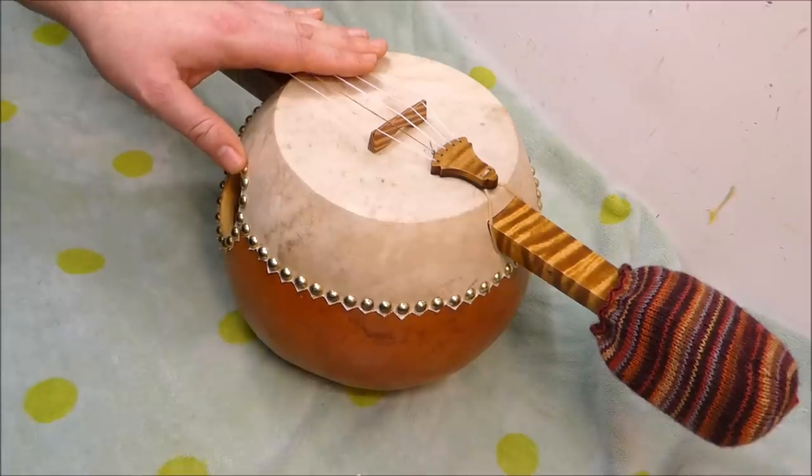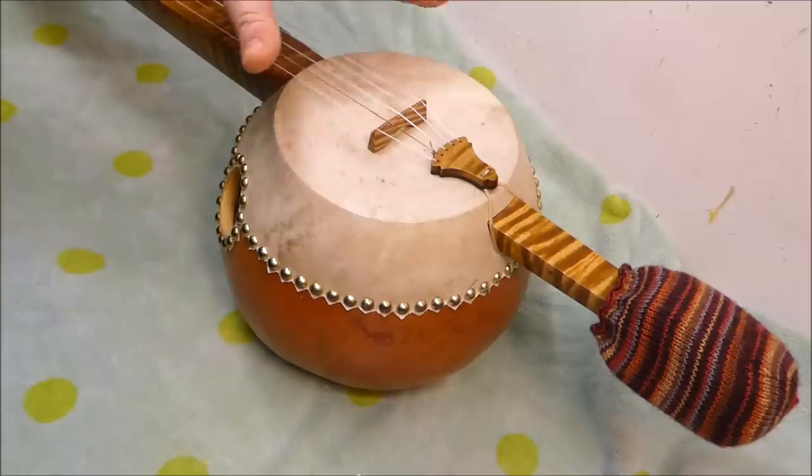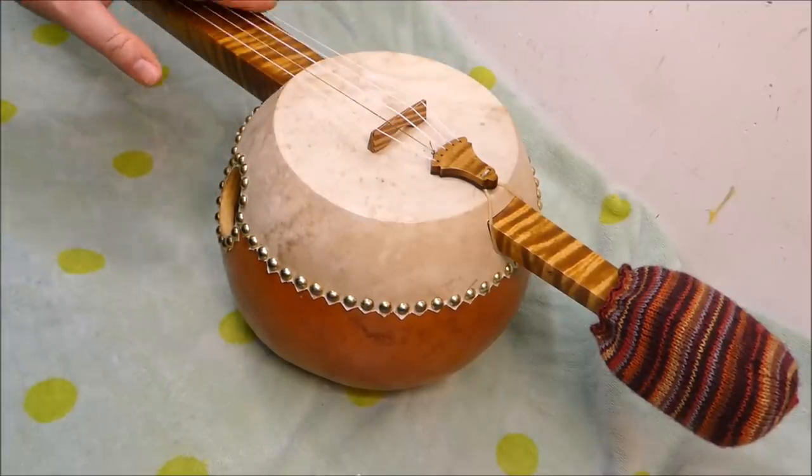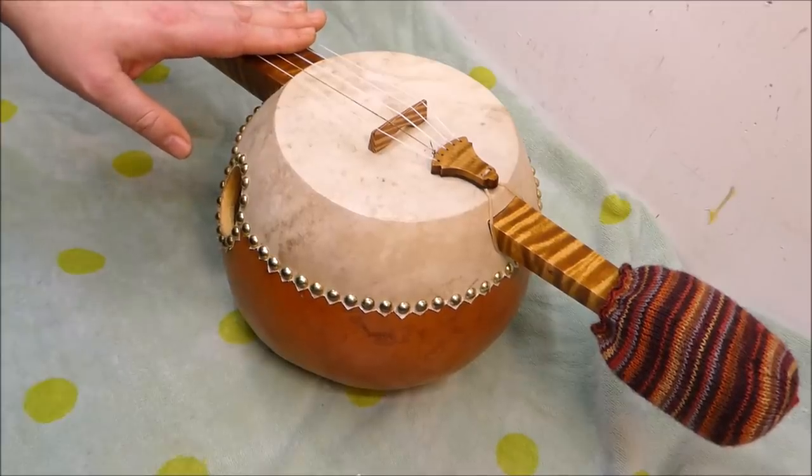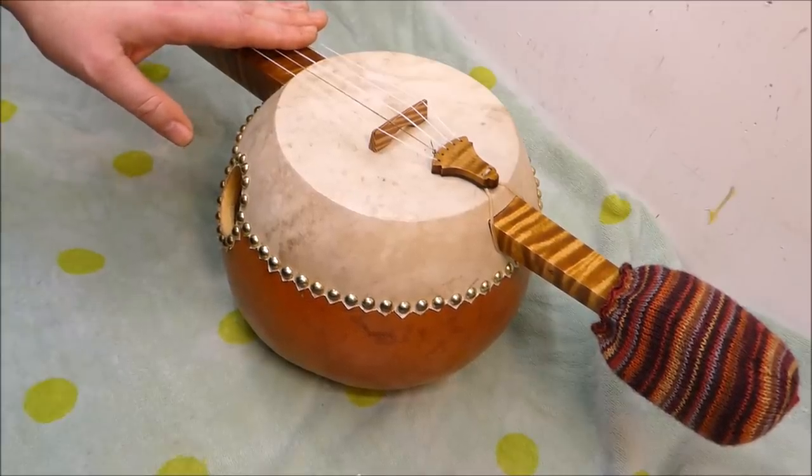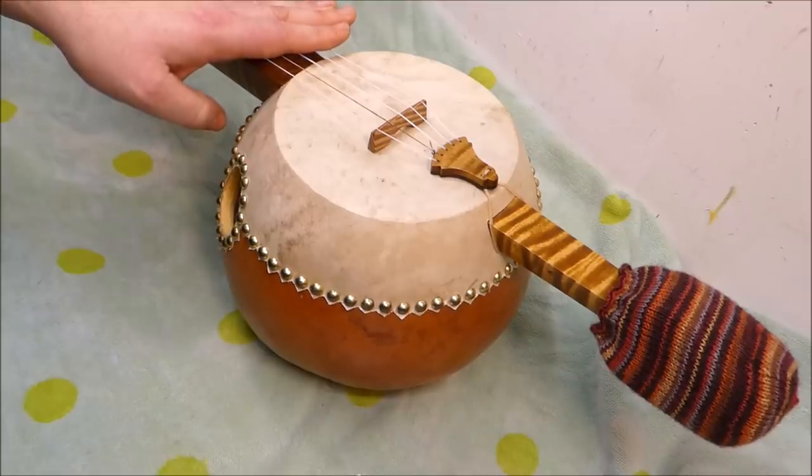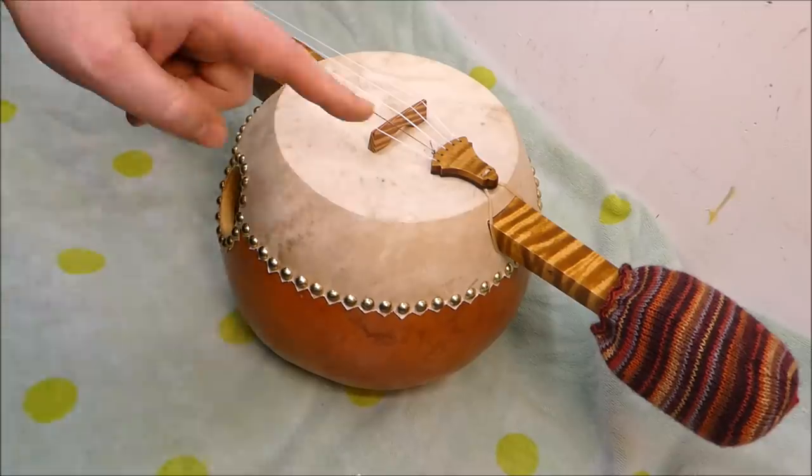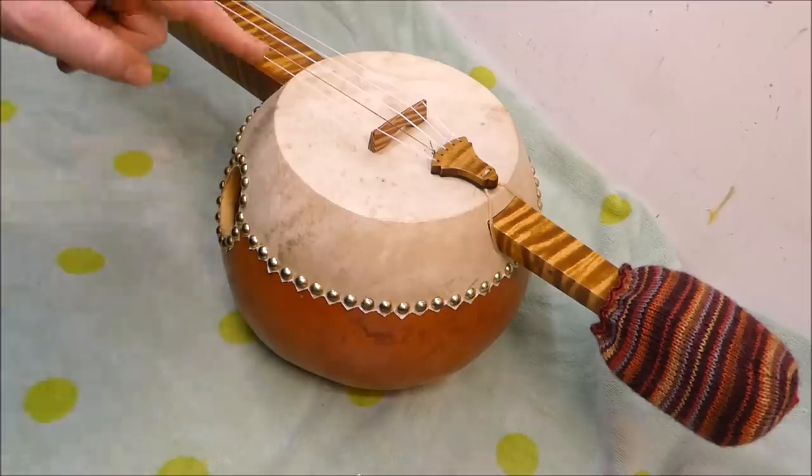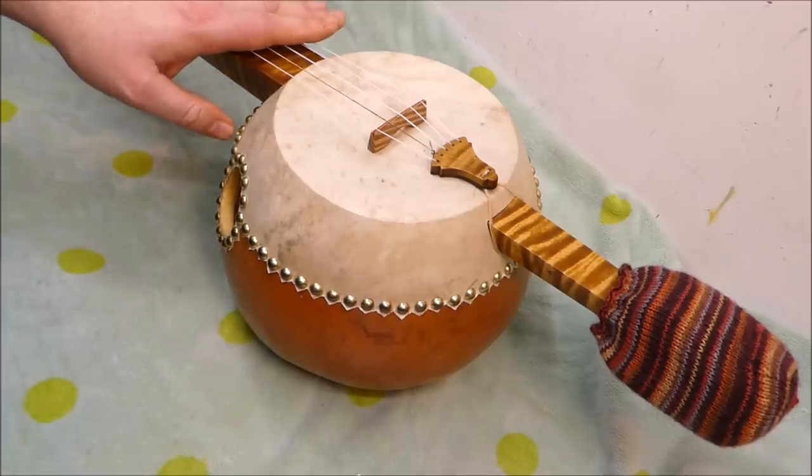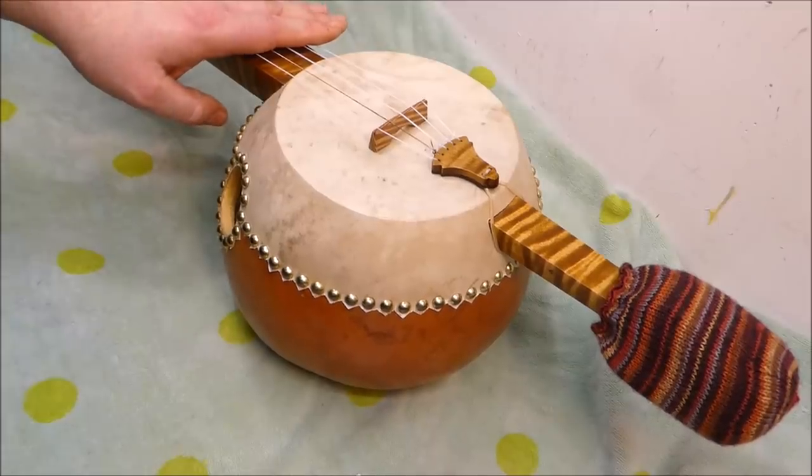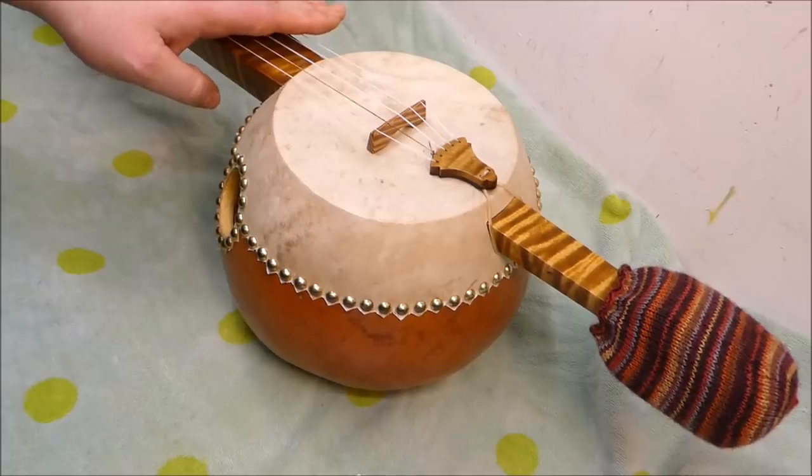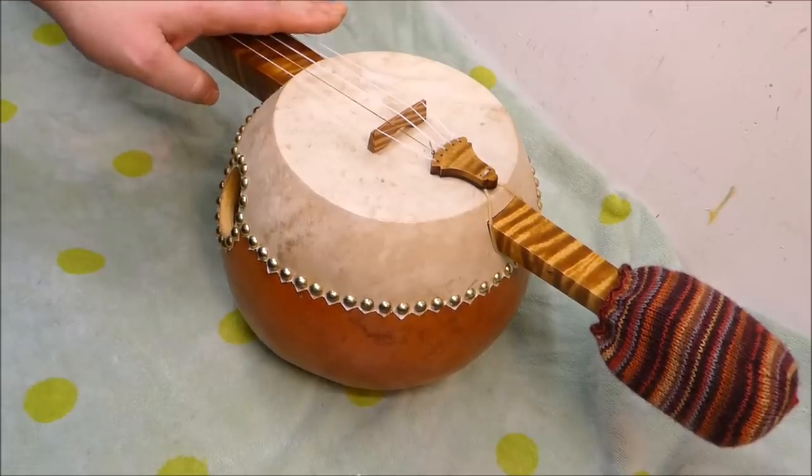It has a sister instrument called the Igil, which is the same thing except it's got a skin head rather than wood. Of course, these were also developed in West African cultures in what is now Senegal, Gambia, Guinea-Bissau, that area. They had the akonting, which is basically the same principle you see here, including interestingly the short high-pitched drone string that actually predates the modern banjo. This is probably the instrument that enslaved people brought with them, either physically or in memory, when they were transported to the Americas.